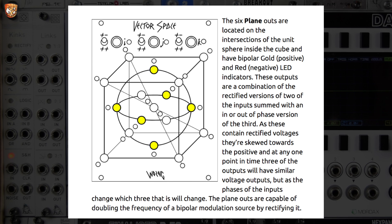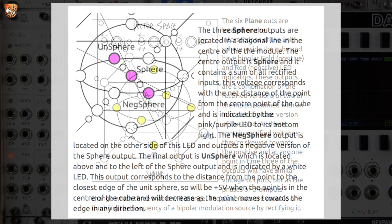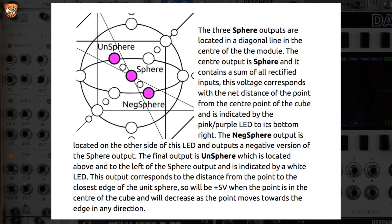If we're thinking of audio, rectification gives octave-up effects — there's a lot to explore. The three sphere outputs are located in a diagonal line in the center of the module. The center sphere output contains a sum of all the rectified inputs, corresponding to the net distance of the point from the center of the cube, indicated by a pinky-purple LED. The negative sphere output gives a negative version, and the one-sphere output is located just above and to the left, indicated by a white LED.